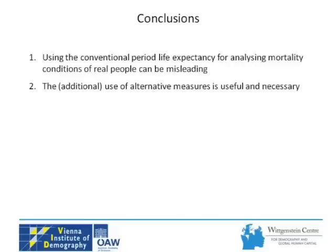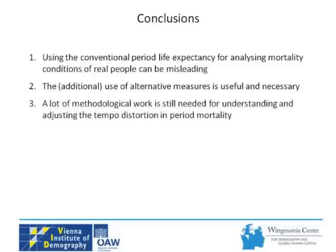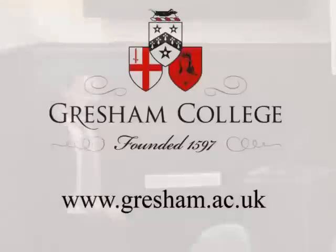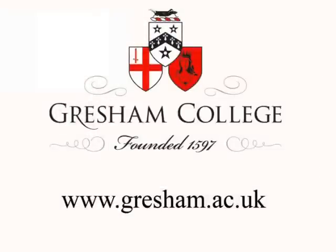I also think the additional use of alternative measures - be it tempo-adjusted measures or cross-sectional cohort averages - is useful and necessary when we want to understand what's going on in cross-sectional changes in mortality. Finally, a lot of methodological work is still needed for understanding and adjusting this tempo distortion in period mortality. I'd like to use this occasion to thank John Graunt for giving us ideas that still fascinate us 350 years later, and we're still not fully clear on how we should interpret, take, and use the life table. Thank you very much.